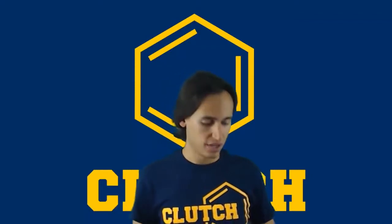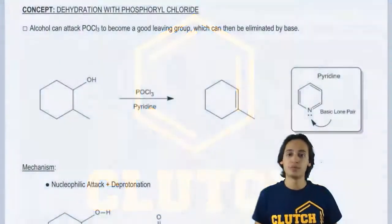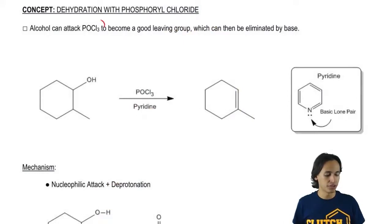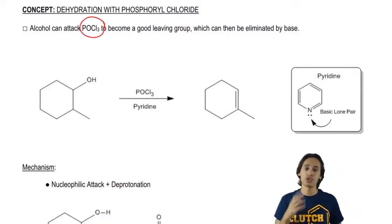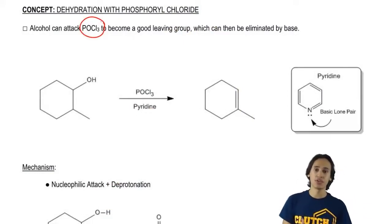So instead of using that, for these we're going to use phosphoryl chloride, and what phosphoryl chloride looks like is basically POCl3, that's what we're going to talk about right now. So it turns out that POCl3 in unison with pyridine,